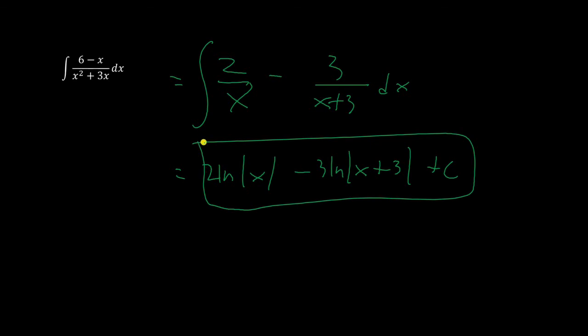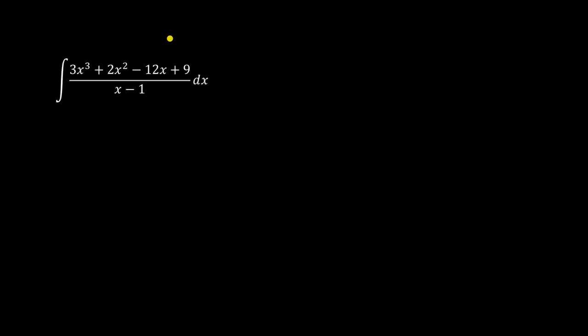Currently, the AP test only tests problems with linear, non-repeating factors like that. Another version of the problem you might see is when the numerator has a higher exponent than the denominator. In this case, you first have to use long division to split it into a polynomial and the remainder. The polynomial can be integrated using normal methods, and the power for the remainder will be higher for the bottom than the top, so it can be integrated normally using the same technique of fractions that I just said.